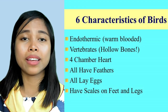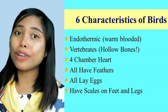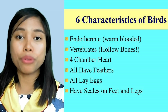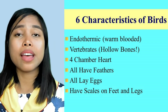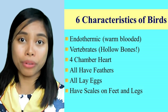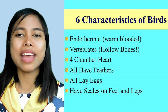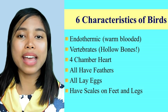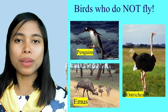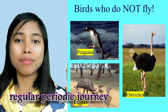There are six characteristics of birds. First, birds are endothermic — they are warm-blooded animals. They have vertebrae or hollow bones, four chambers of the heart, feathers, and they all lay eggs. They also have scales on their feet and legs. Birds that do not fly include penguins, ostriches, and emus.